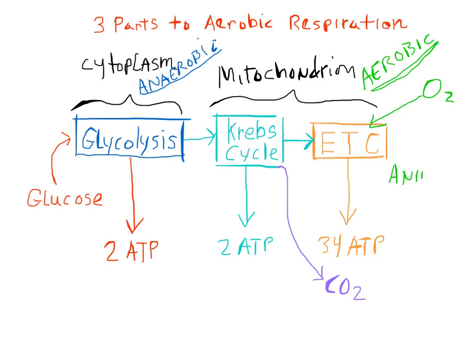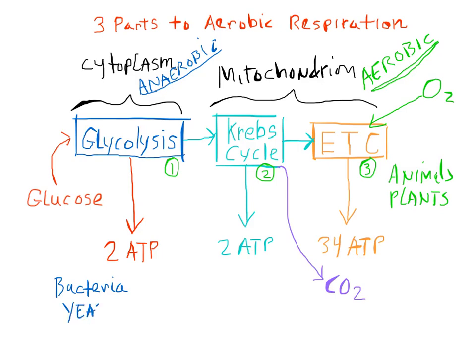Animals are aerobic creatures and they use all three processes: glycolysis, the Krebs cycle, and the electron transport chain. The same is true for plants when they're growing. However, there are many species of bacteria and things like yeasts that are anaerobic and they only use glycolysis.